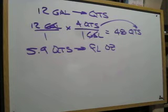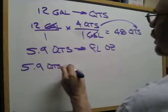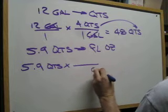So I'm going to go from quarts to pints, and then I can go up to the pints and go to the fluid ounces. So I'm going to do 5.9 quarts times line, quarts on the bottom.